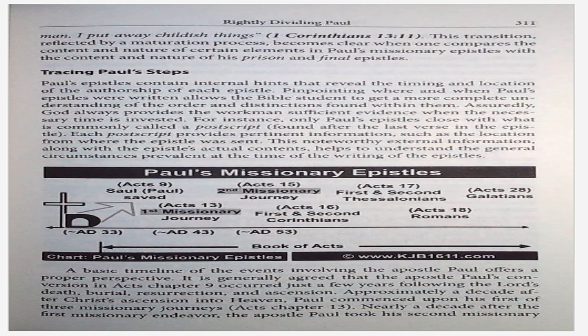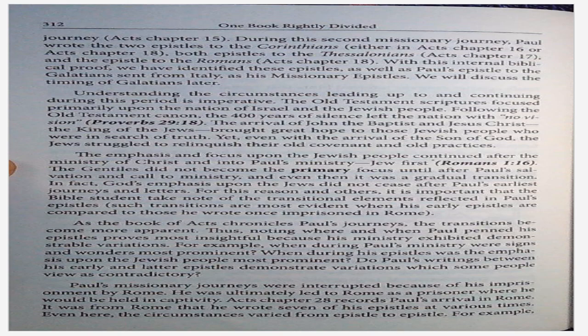It is generally agreed that the Apostle Paul's conversion in Acts chapter 9 occurred just a few years following the Lord's death, burial, resurrection, and ascension. Approximately a decade after Christ's ascension into heaven, Paul commenced upon his first of three missionary journeys in Acts chapter 13. Nearly a decade after the first missionary endeavor, the Apostle Paul took his second missionary journey in Acts chapter 15. During this second missionary journey, Paul wrote the two epistles to the Corinthians — either in Acts chapter 16 or Acts chapter 18 — both epistles to the Thessalonians in Acts chapter 17, and the epistle to the Romans in Acts chapter 18. With this internal biblical proof, we have identified these epistles as well as epistles written to the Galatians sent from Italy as his missionary epistles. We will discuss the timing of Galatians later.